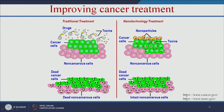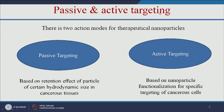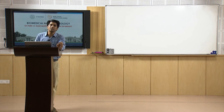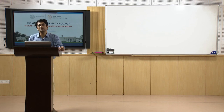In nanotechnology-based treatment, nanoparticles specifically bind only to the cancer cells, killing only the cancer cells while the healthy cells are unaffected. It is highly specific and targeted. These nanoparticles can be targeted to tumor cells by passive targeting and active targeting. Passive targeting is based on the retention effect of particles of a certain hydrodynamic size in cancerous tissue. The tumor location has leaky blood vessels and enhanced permeability and retention — this is called the EPR effect — so nanoparticles go and bind only to the tumor location.